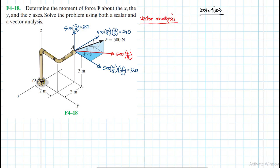We also need a position vector running from O to A. That is our position vector. The coordinates for A are: in the x direction it is minus 2, in the y direction it is positive 2, and in the z direction it is 3. Therefore the position vector rA is equal to minus 2i plus 2j plus 3k.